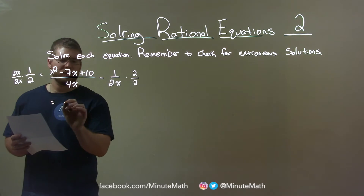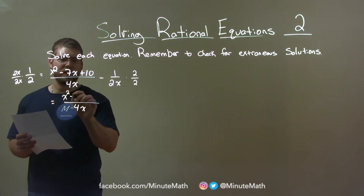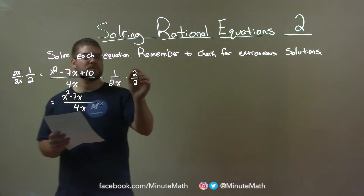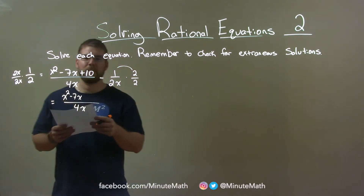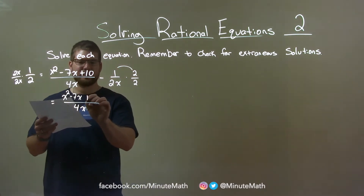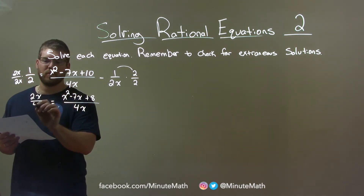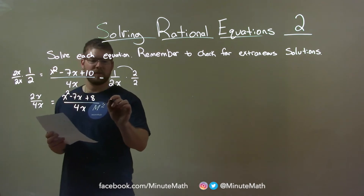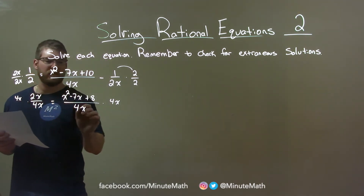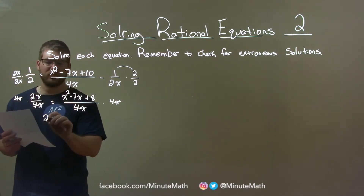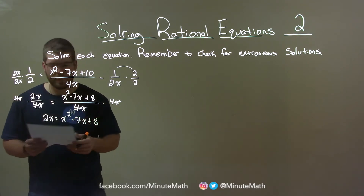Let's deal with the right-hand side first. We have 4x in the denominator, which we want. So let's rewrite this: x squared minus 7x, then 2 times 1 is 2, and 10 minus 2 is 8. So we have x squared minus 7x plus 8 over 4x, minus 2x over 4x. If I multiply 4x to both sides, these denominators cancel. I'm left with 2x equals x squared minus 7x plus 8.